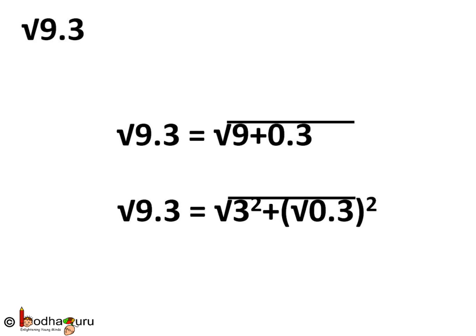So that way we can write square root of 9.3 is equal to square root of, in the entire bracket, 3 squared plus square root of 0.3 squared. So length of perpendicular or base has to be square root of 0.3, which is very hard to achieve. We learned how to find square root of a natural number in the last video.